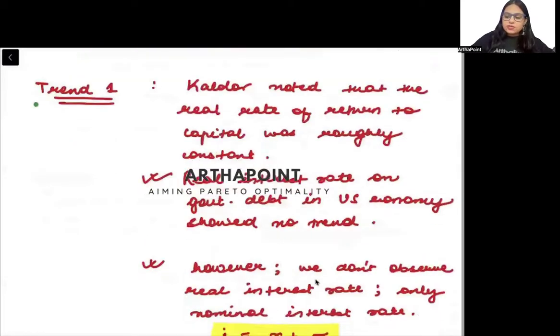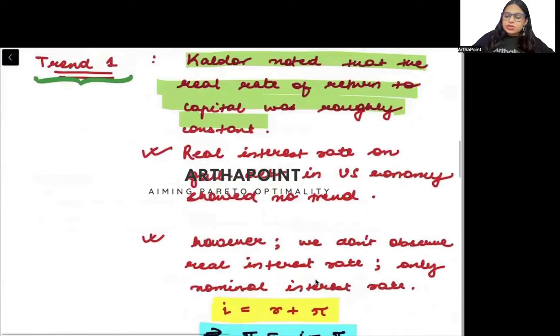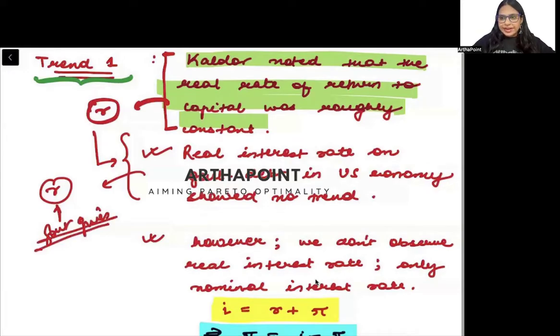Let us look at the reason for trend number 1. Calder noted that the real rate of return was roughly constant. He saw that return on capital is very closely related to the real interest rate that the government gives. If you invest in a government bond or government debt, then the real interest rate is very closely related to the real return on capital. And this has remained constant over time.